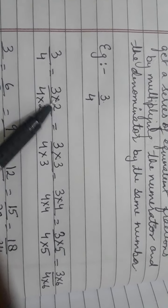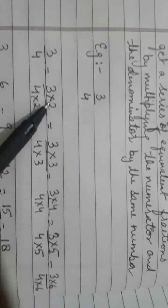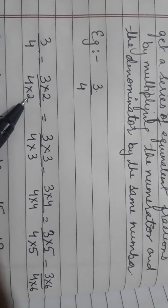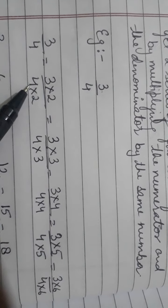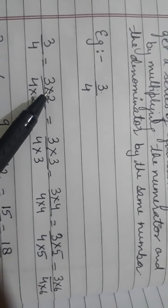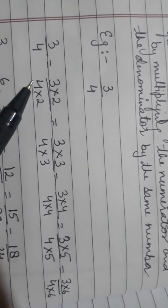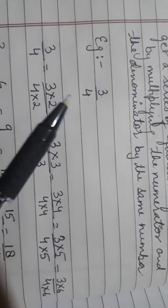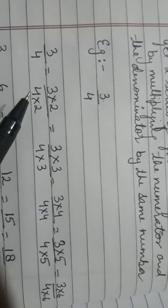Let us take an example. I have taken 3 by 4. First I have multiplied 3 by 2 — equivalent fractions says the number of times you multiply the numerator, the same number of times you multiply the denominator. So I multiply 4 also by 2. I cannot multiply the numerator by 2 and the denominator by 4 or 3 — that is wrong, that is not an equivalent fraction. So 3 × 2 = 6 and 4 × 2 = 8.